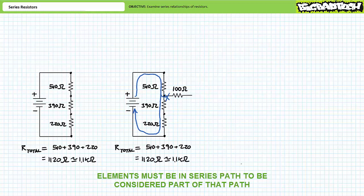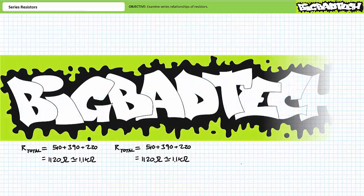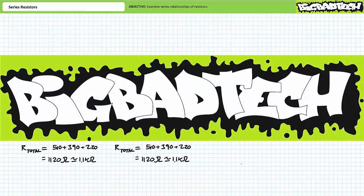Series circuits are inline configurations of resistors through which current flows end to end. In conclusion, this lecture took a look at series or inline configurations of resistors. We learned that resistors in series add up, and discussed the influence of order in series circuits, identical resistors in series, abnormally large and small resistors in series, and the influence of shorts and opens. Thank you very much for your attention and interest — check out the Big Bad Tech channel for additional resources.